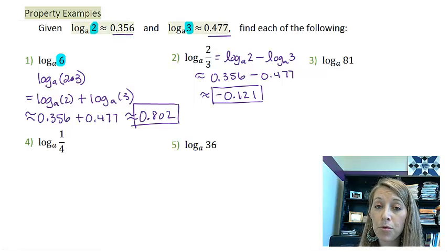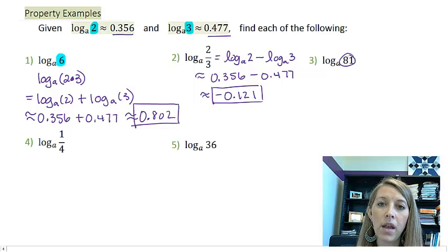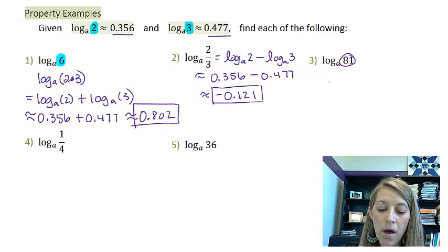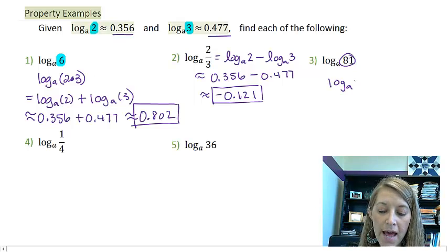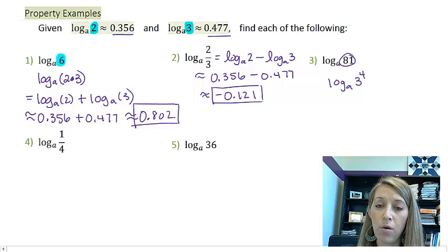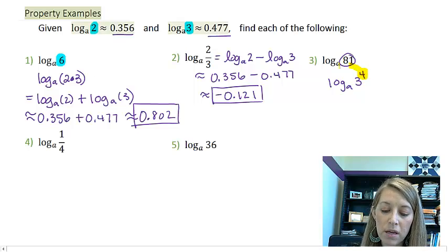Okay, example 3 is a little bit more difficult. Well, nothing here says that I have to use both of these numbers. So if I look at 81, I know it can be written as 3 to a power. 81 can actually be written as 3 to the 4th power.